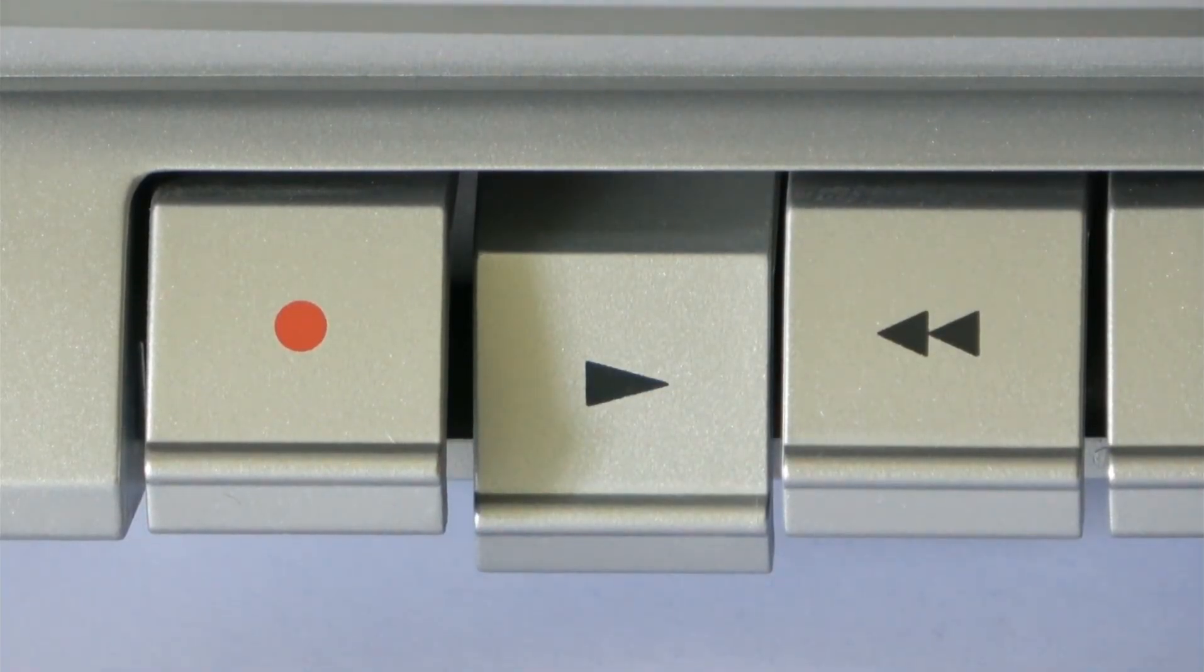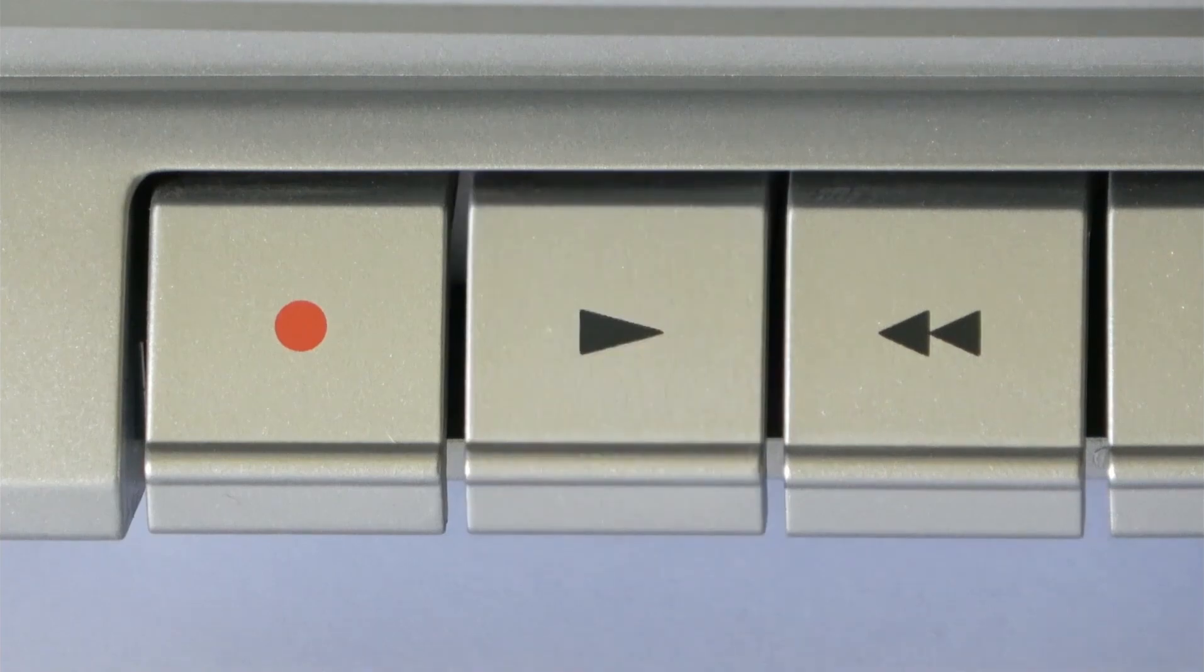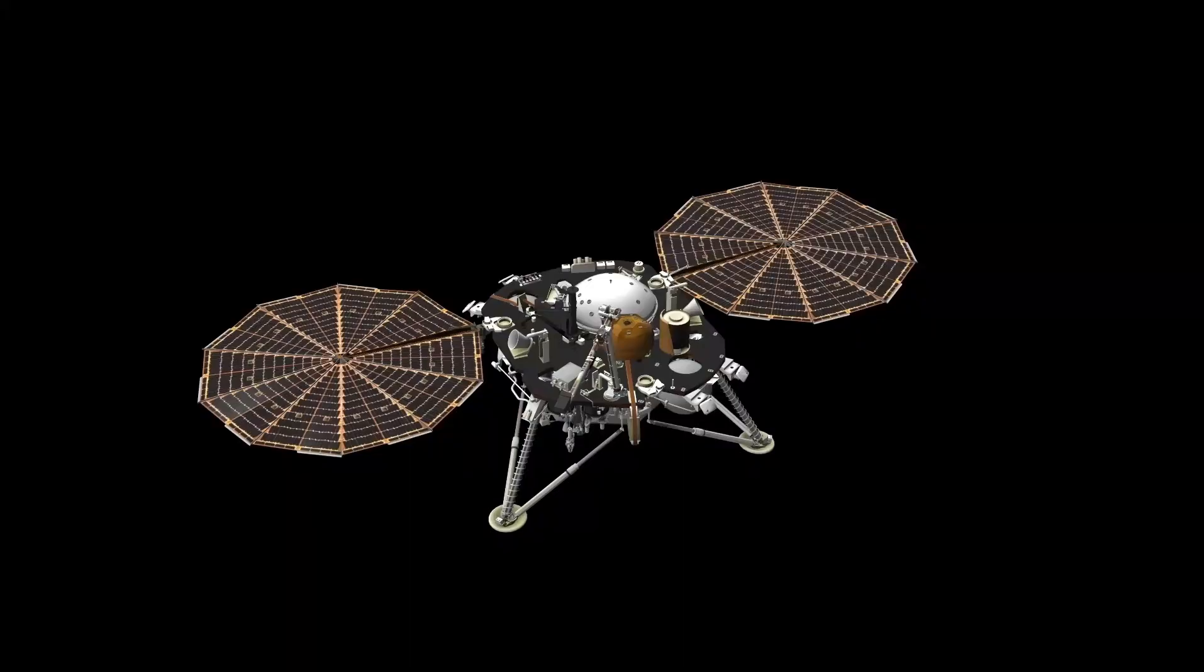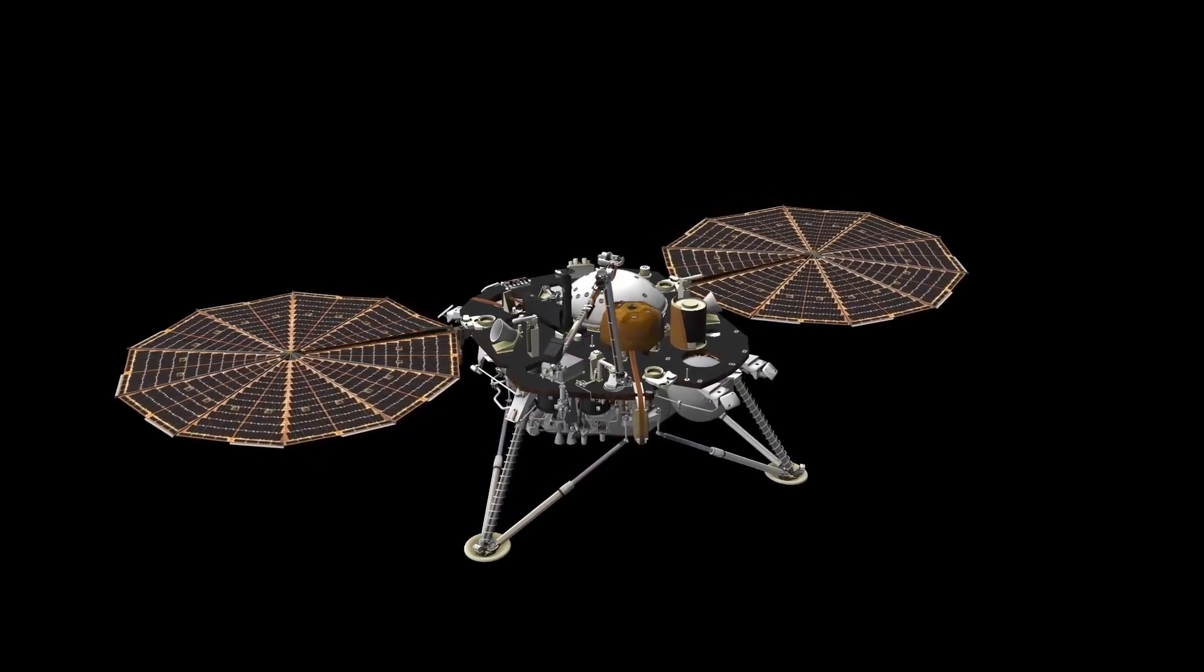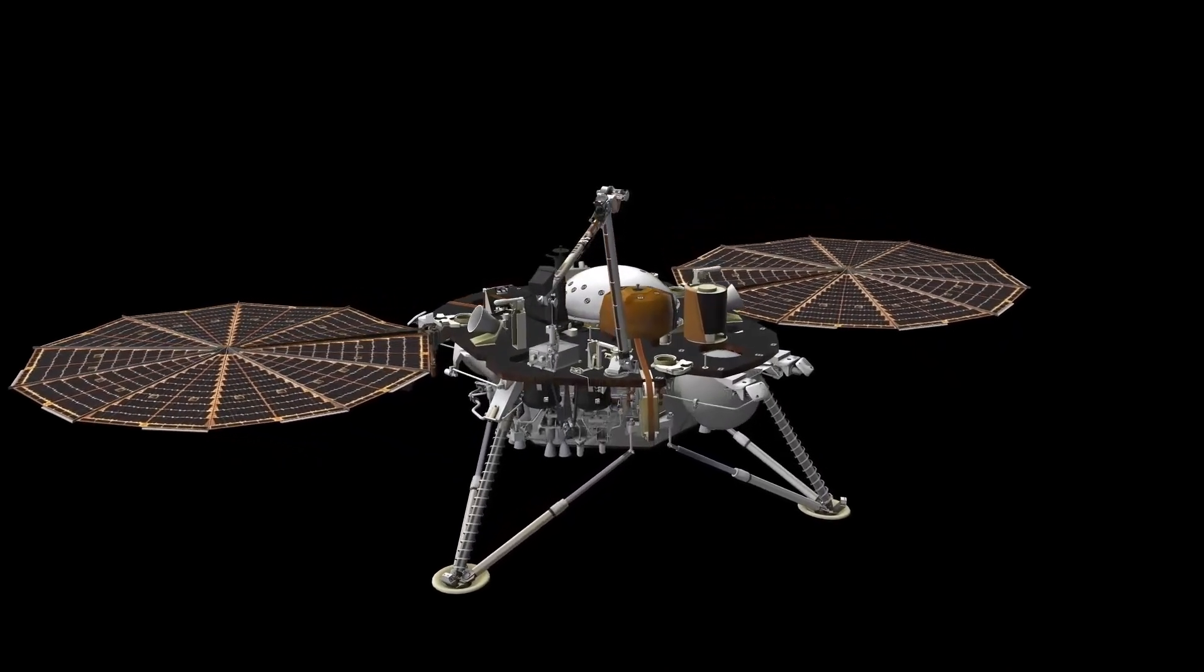Beyond serving as a mere boundary, the heliosphere plays a crucial role in shielding Earth and other planets from the galaxy's most intense radiation. Without it, life on our planet would be subjected to far more hazardous cosmic rays.